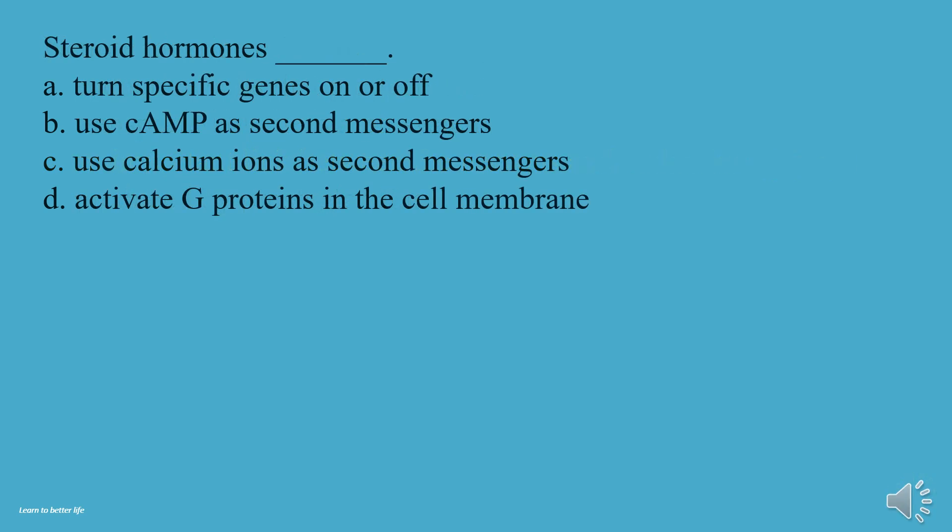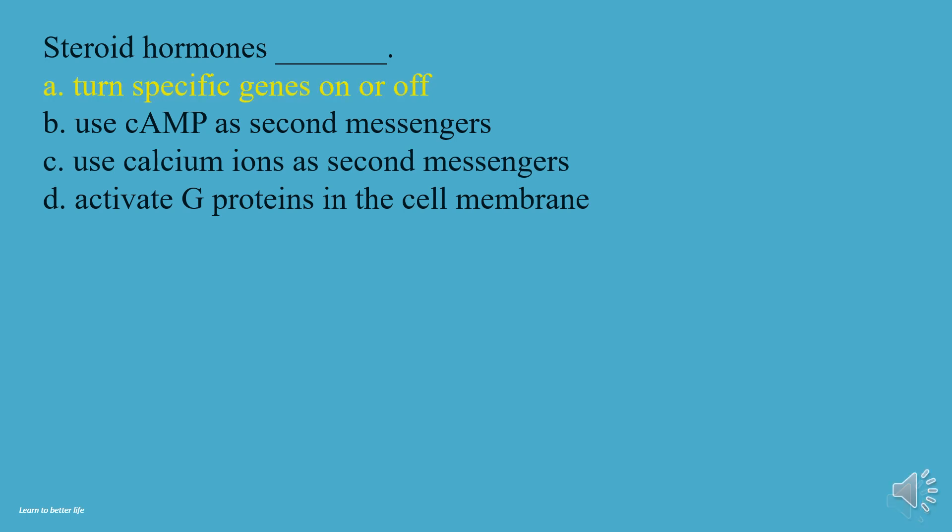Steroid hormones: A, Turn specific genes on or off. B, Use cAMP as second messengers. C, Use calcium ions as second messengers. D, Activate G proteins in the cell membrane. The answer is A, Turn specific genes on or off.